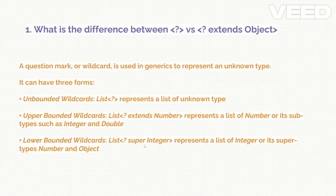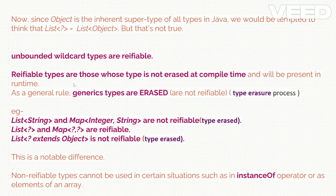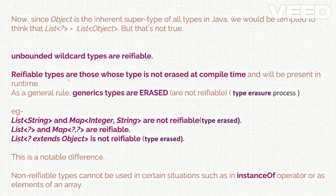Object is inherently the super type of all classes in Java, so Number and Object can also be put in this list along with Integer. Now, coming back to the main question: what is the difference between '?' and '? extends Object'? Since Object is the inherent super type of all types in Java, we would assume that List<?> equals List<Object>, but that is not true.